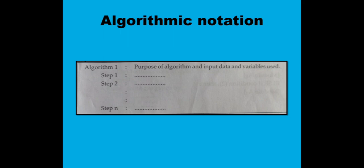In the figure, the first part shows the purpose and input data and variable declaration. Then there are n number of steps executing as per the instructions, and you can transfer control to any location. To end the program, you use the exit or stop statement. This is the important part of algorithmic notation. In the next lecture, we will study the flowchart topic in detail. Thank you so much, we'll meet again.